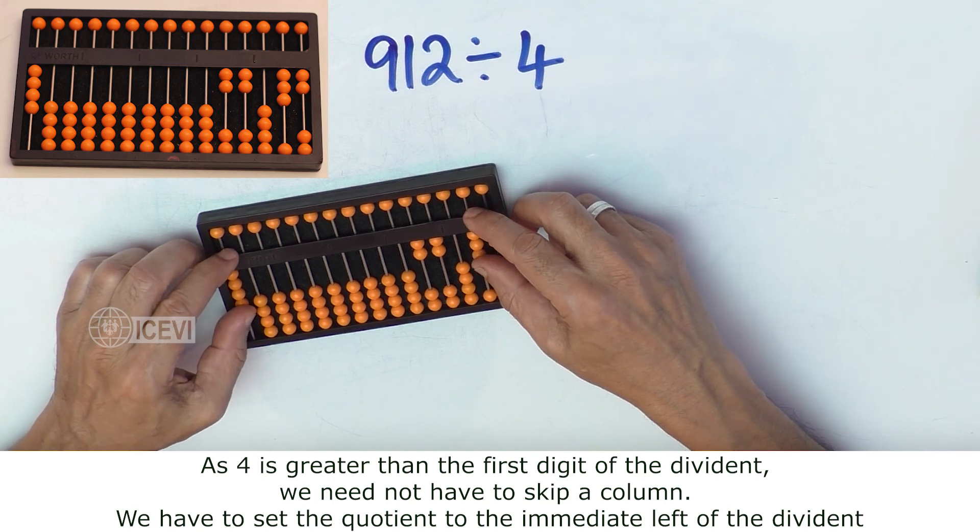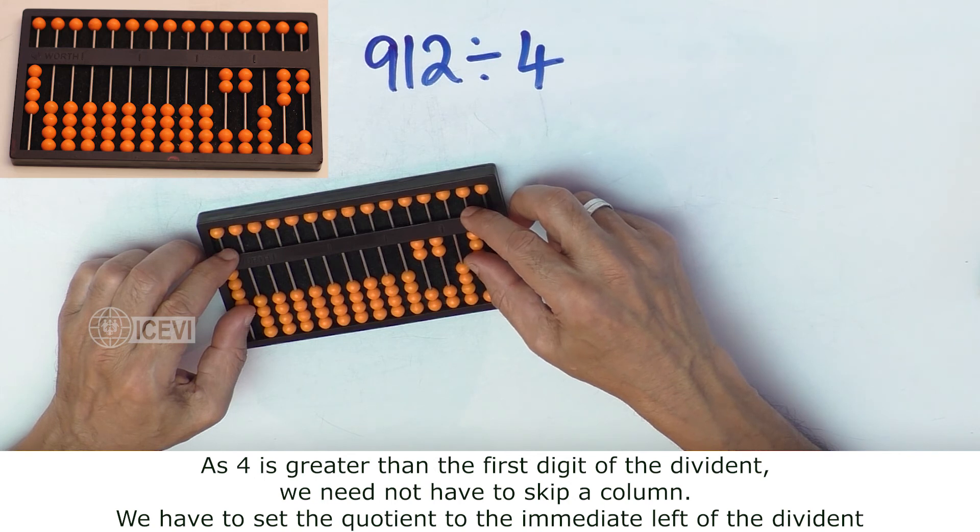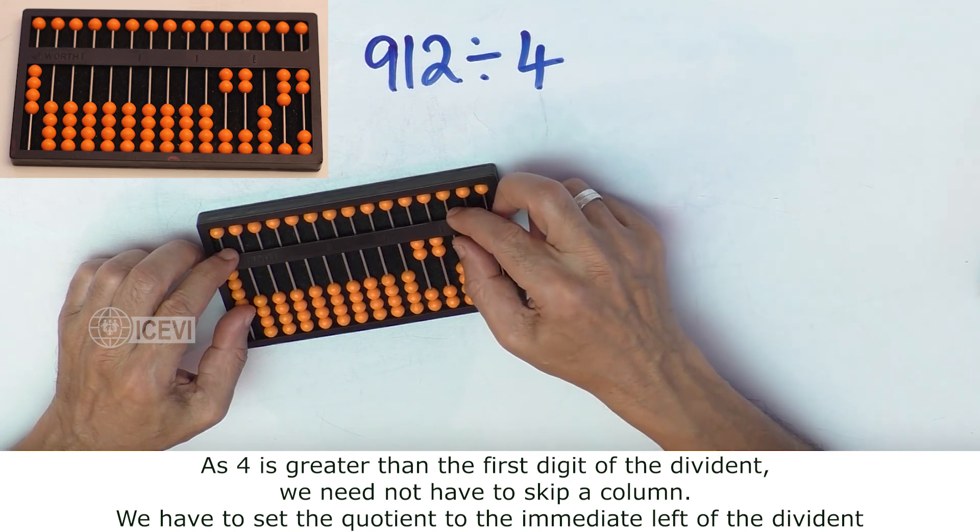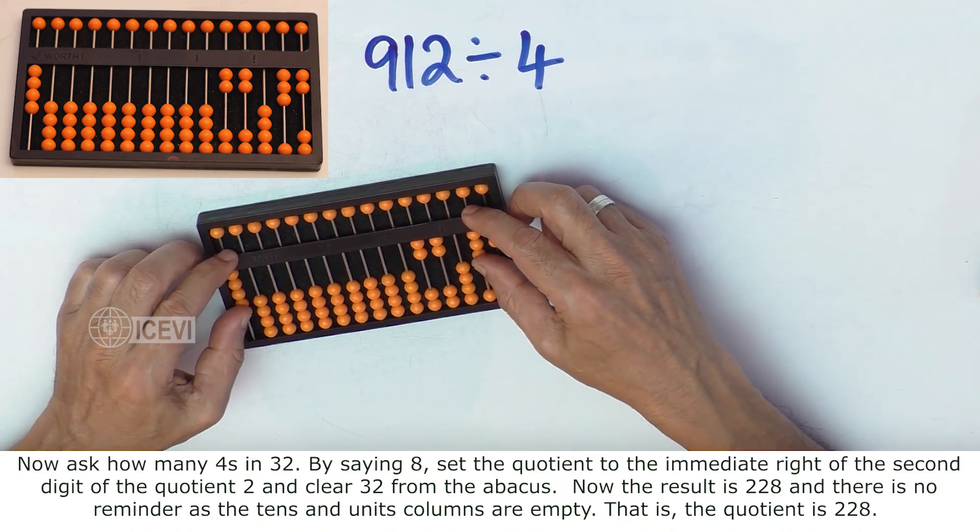Now as 4 is greater than the first digit of the dividend, we need not skip a column. We set the quotient to the immediate left of the dividend. Now ask: how many 4's in 32?